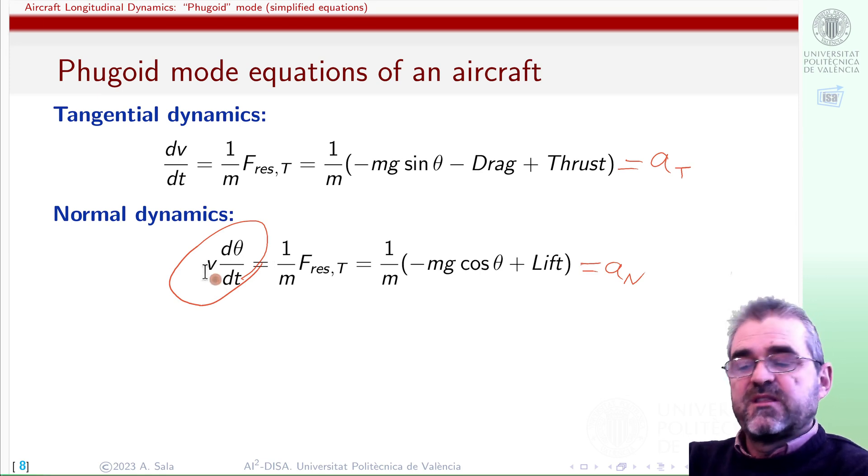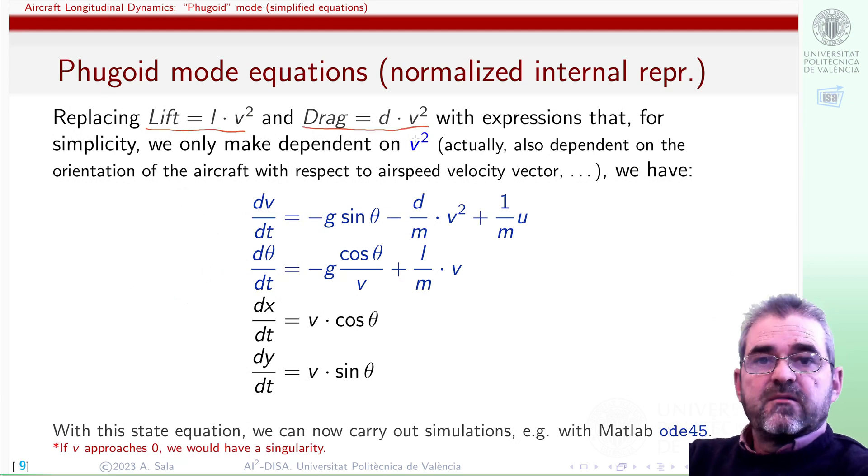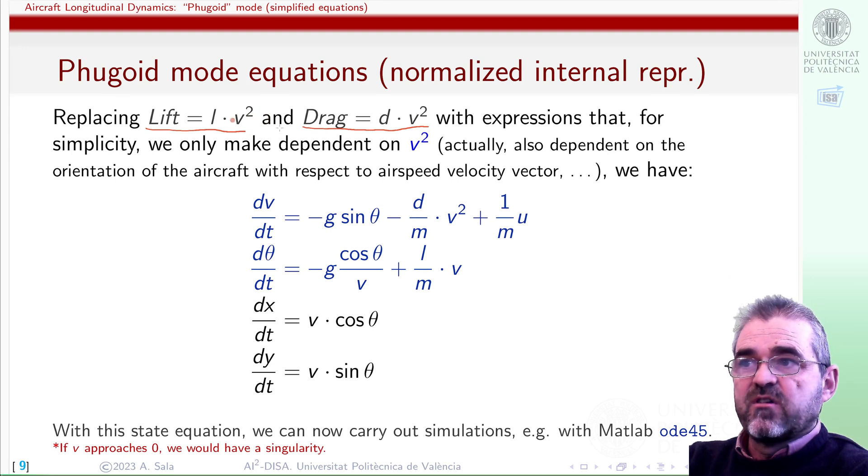So, dividing this equation by the speed, and replacing lift and drag by some expressions that multiply the square of the air speed by some coefficient, which is constant for simplicity, but of course in more complex models, those lift and drag coefficients depend on many things about the state of the aircraft.